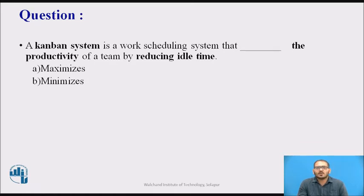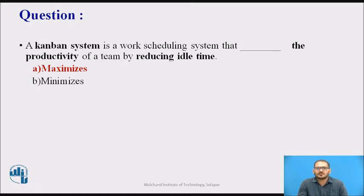A Kanban system is a work scheduling system that maximizes the productivity of a team by reducing the idle time. Idle time can occur within any process, workflow, or procedure and can usually be traced back to opportunities within the process itself.